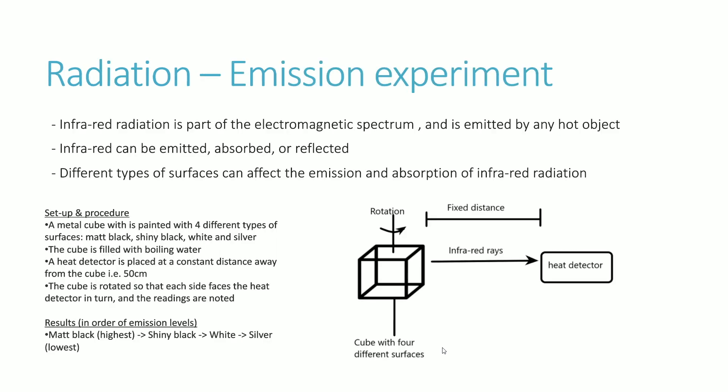The last topic is radiation. Infrared radiation is part of the electromagnetic spectrum, which we'll cover in the next topic. Any thermal or hot object emits infrared radiation. Infrared rays can be emitted, absorbed, or reflected, and different types of surfaces affect the emission, absorption, or reflection of these rays.